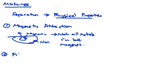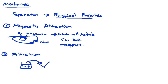Another method is filtration, which is used to separate solids from liquids. For example, if you have water with sand in it, you pour the water into a funnel with filter paper. The sand is blocked by the filter paper because it is too big, while the water seeps through. This makes use of the property of size — the sand cannot go through the filter paper.